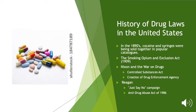A brief history of drug laws in the United States: before the early 1900s, people could buy cocaine, syringes, and other opiates over the counter. Then in 1909, the Smoking Opium and Exclusion Act was the first federal law enacted to ban recreational use of opioids. After that, in 1914, Congress issued the Harrison Act, which allowed the government to regulate and tax the production, importation, and distribution of cocaine and other opiates.